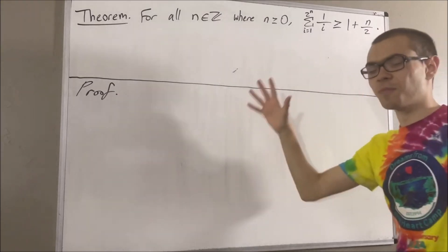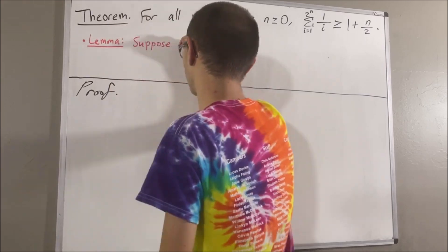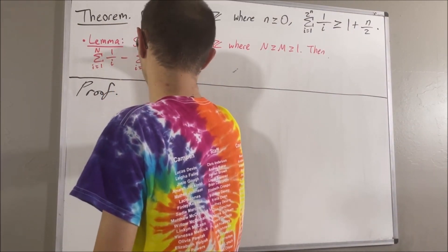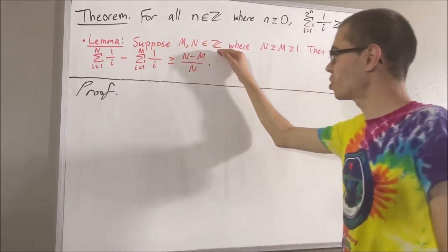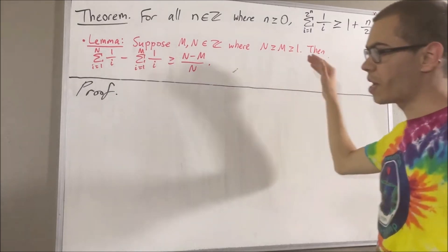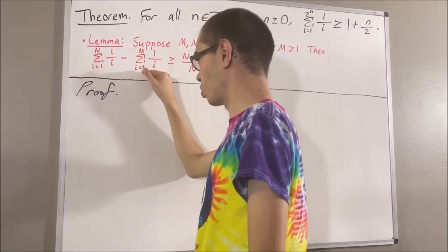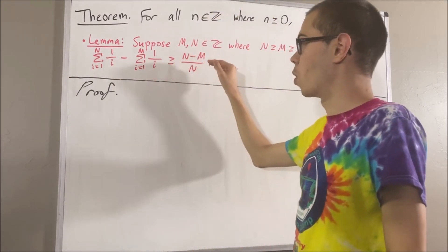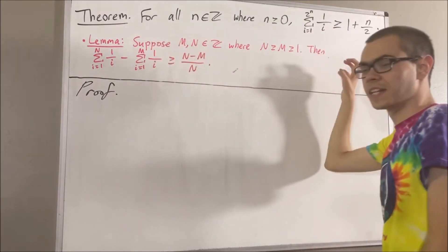Now, in proving this theorem, we are going to use the following preliminary result. Suppose m and n are integers where n is greater than or equal to m is greater than or equal to 1. Then the sum from i equals 1 to n of 1 over i, minus the sum from i equals 1 to m of 1 over i, is greater than or equal to n minus m over n. I'll leave a proof of this in the description below.